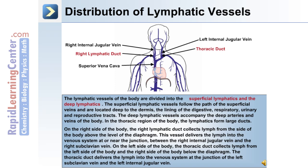In the thoracic region, the lymphatics form large ducts. On the right side of the body, the right lymphatic duct collects lymph from above the level of the diaphragm and delivers it into the venous system at or near the junction between the right internal jugular vein and the right subclavian vein. On the left side, the thoracic duct collects lymph from the left side of the body and from the right side below the diaphragm, delivering lymph into the venous system at the junction between the left subclavian vein and the left internal jugular vein.